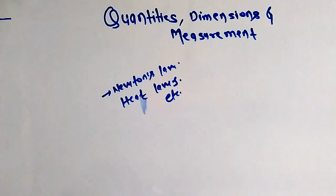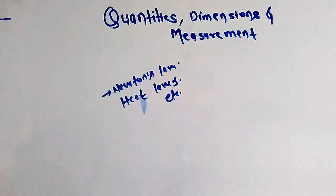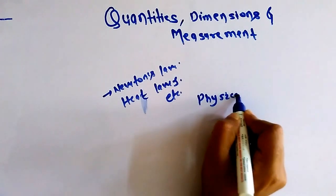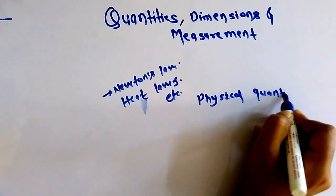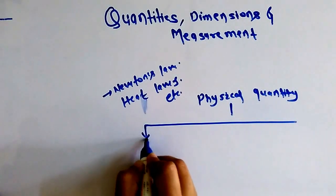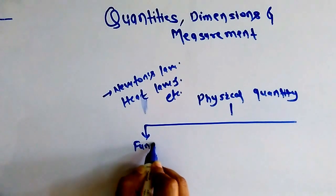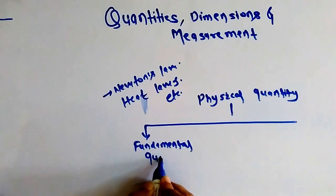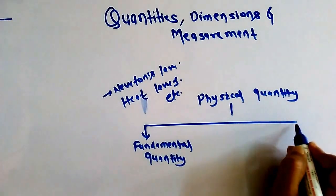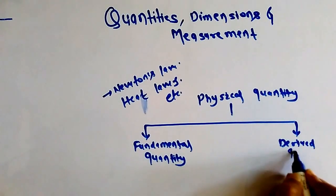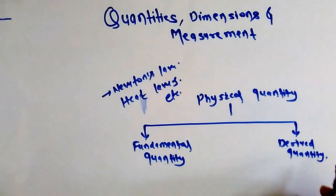Physical quantities can be categorized into two broad classes: one is known as fundamental quantity and another one is known as derived quantity.